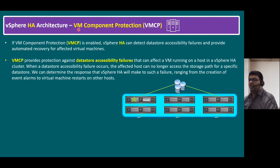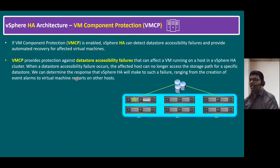In this scenario, we have to enable the vSphere HA architecture's VM Component Protection, abbreviated VMCP. When we enable the VMCP option, vSphere HA can detect data store accessibility failures and provide automated recovery for affected virtual machines. The recommendation is that VMCP protection should be enabled. VMCP provides protection against data store accessibility failures that can affect VMs running on hosts in a vSphere HA cluster. When a data store accessibility failure occurs, the affected host can no longer access the storage path for a specific data store, and we can determine the response that vSphere HA will make — ranging from the creation of event alarms to virtual machine restarts on other hosts.